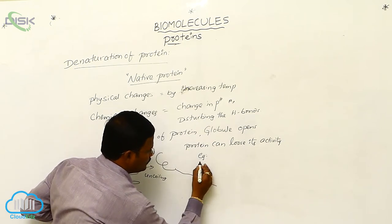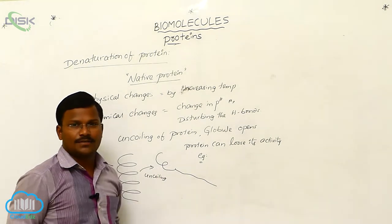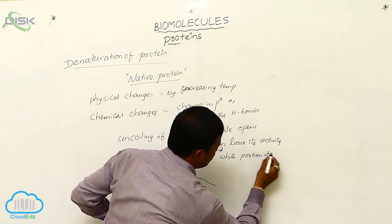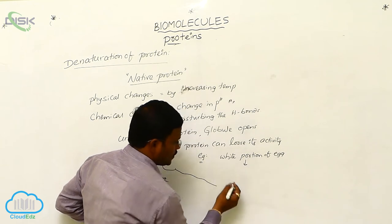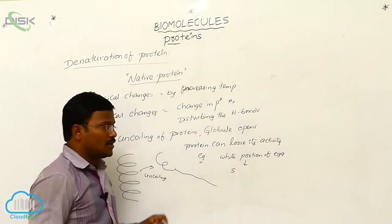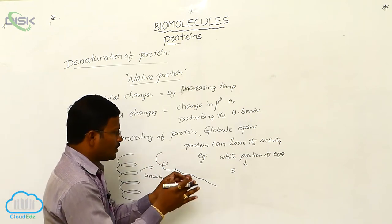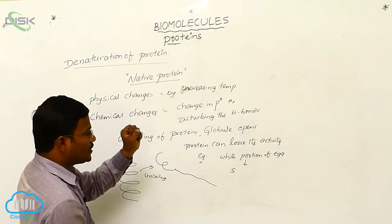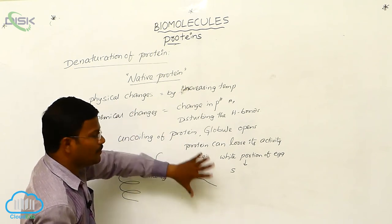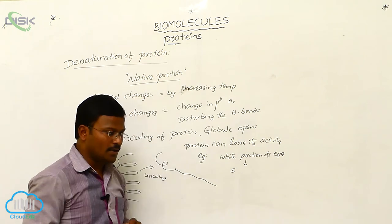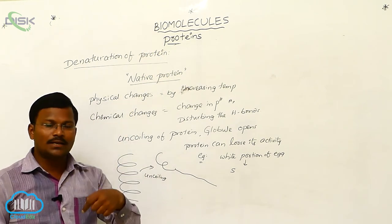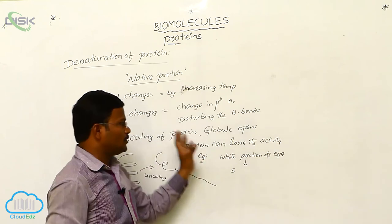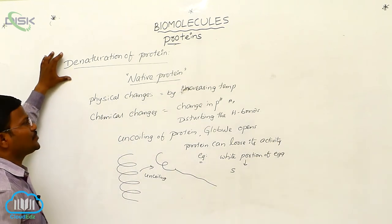A simple example: while making an omelet, the white portion of the egg becomes stiff. The protein molecules of the egg turn white — by heating or increasing temperature, the native character of the egg protein is disturbed. This is denaturation of protein. Similarly, curdling of milk — when milk converts into curd, the protein molecules of milk are disturbed. These two are classic examples of denaturation of proteins.